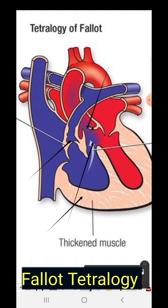Due to pulmonary stenosis, right-sided blood is shunted to the left side. As a result, there is arterial unsaturation, polycythemia, cyanosis, poor pulmonary vascularity, clubbing, hypoxic or blue spells, and cerebral anoxia.